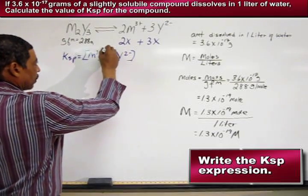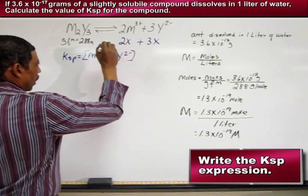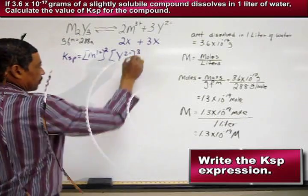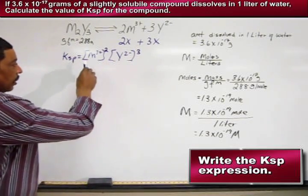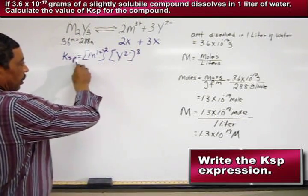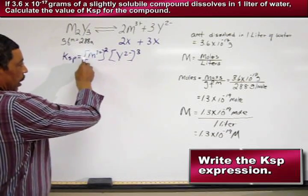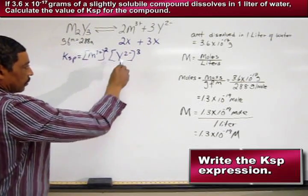So for M3+, we write a 2 and for Y2-, we write a 3. Notice that the KSP expression requires that we use concentrations.